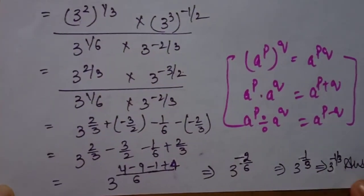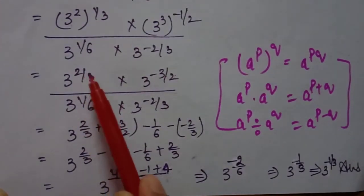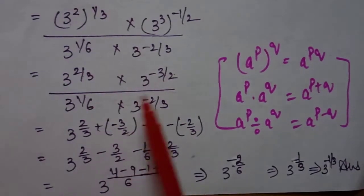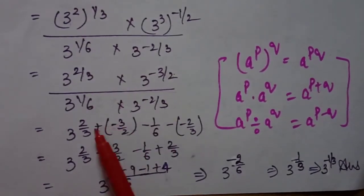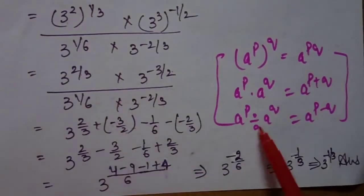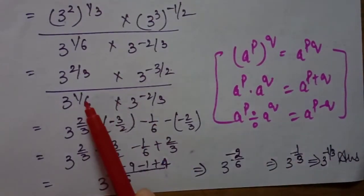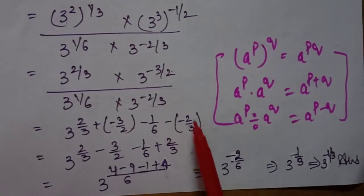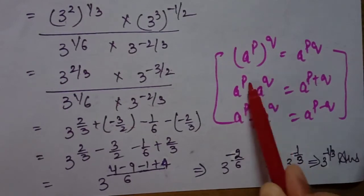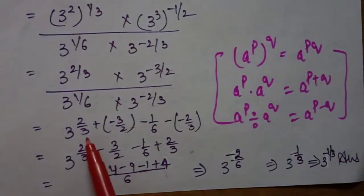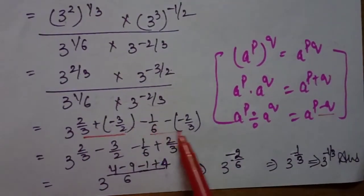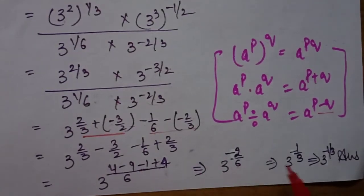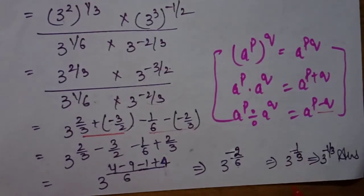You can solve all four terms together or in pairs — your choice. Adding the first two: 2/3 plus minus 3/2. Taking LCM gives minus 1/6. For the division term, powers subtract. After opening the bracket and taking LCM and solving, the final answer is 3 raised to the power minus 1/3.